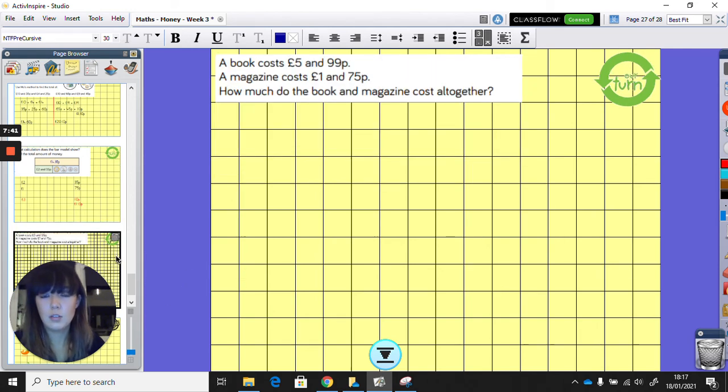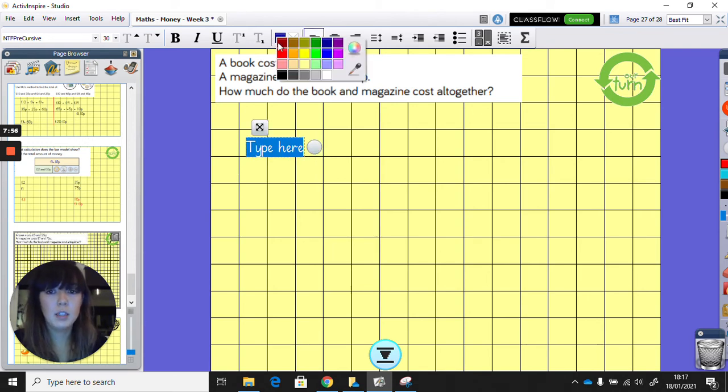Let's try our last, our turn, and then it'll be your turn. So we've got a word problem here. Word problems always make things a little bit more difficult. A book costs £5.99p. A magazine costs £1.75p. How much does a book and magazine cost altogether? So remember that word, altogether, it means that we're going to be adding. Because if it's a total, it's add.